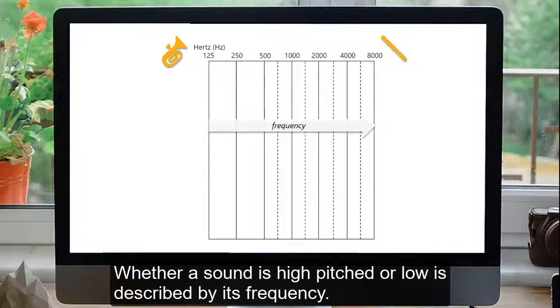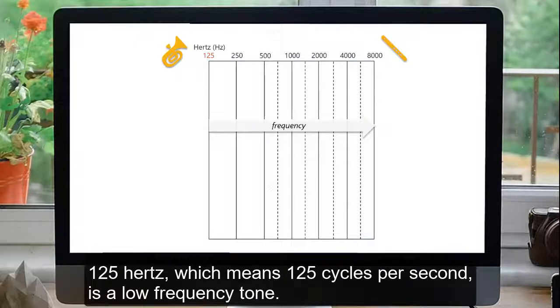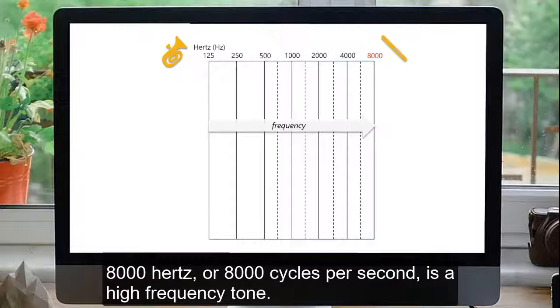Whether a sound is high pitched or low is described by its frequency. 125 Hz, which means 125 cycles per second, is a low frequency tone. 8,000 Hz, or 8,000 cycles per second, is a high frequency tone.